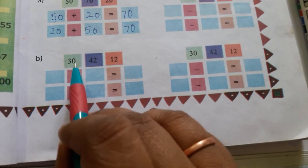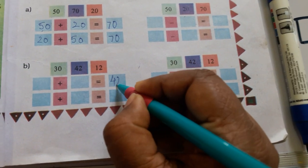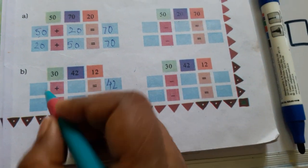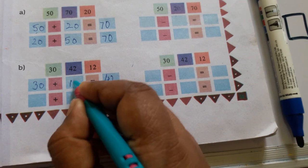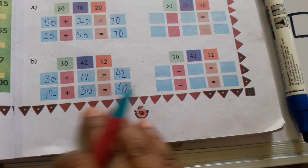Similarly, we will do this. We will write the largest or the greatest number here and the rest two numbers, 30 and 12 in these boxes. And just interchange 12 here and 30 and you get the correct answer.